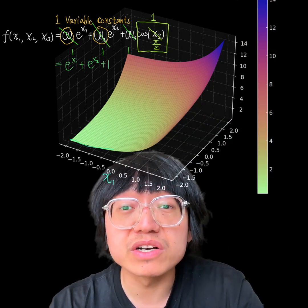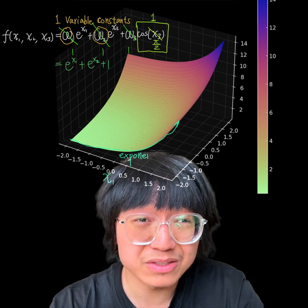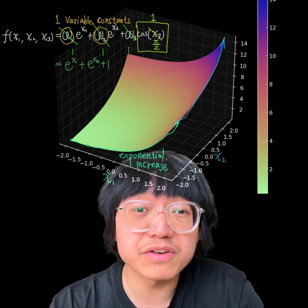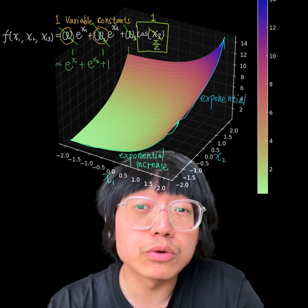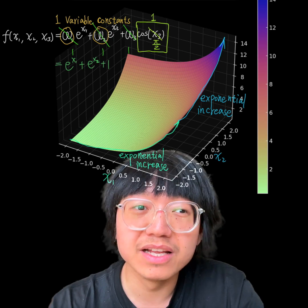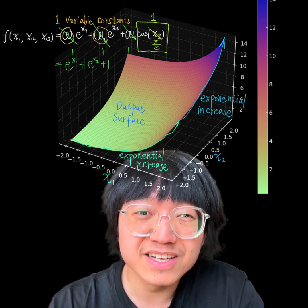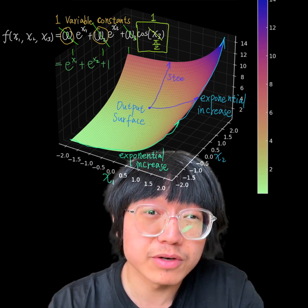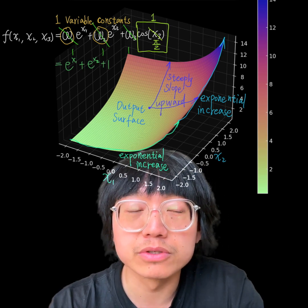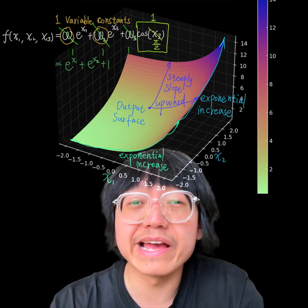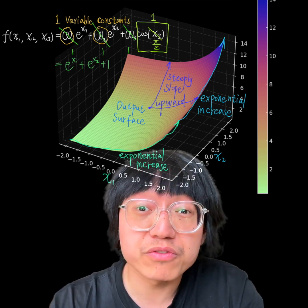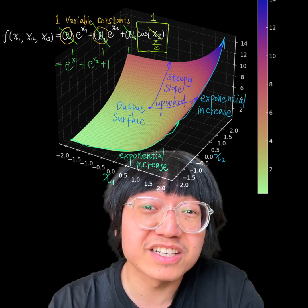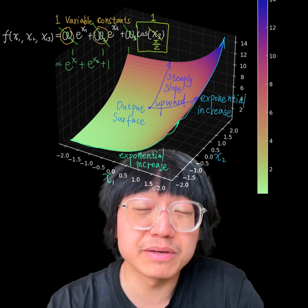In this graph, we plot the function over a range of x₁ and x₂ values. As either x₁ or x₂ increases, the function's value rapidly increases due to the exponential nature of these terms. The output surface forms a curve that slopes steeply upwards as we move away from the origin in the positive direction, effectively showing how exponential growth in one or both variables contributes to a significantly increased function value in three-dimensional space.